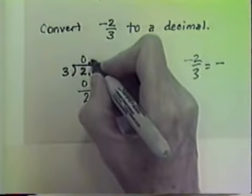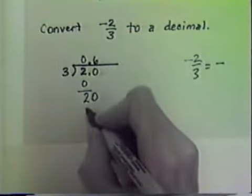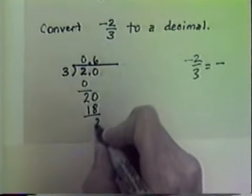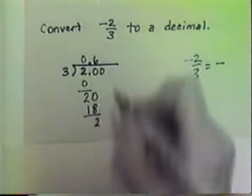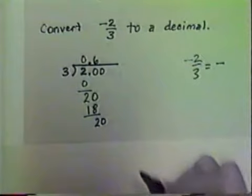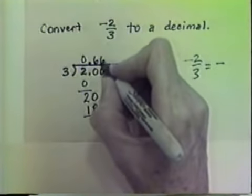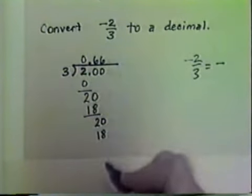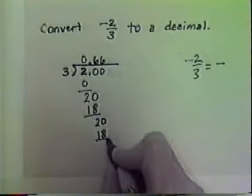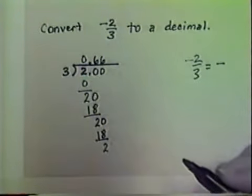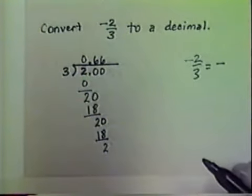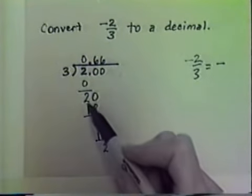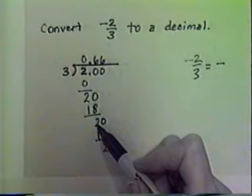Three divides twenty, six times. Six times three is eighteen. Subtract, we get two. Affix another zero and bring it down. Three divides twenty again, giving us six. Six times three is eighteen — you see what's happening. Subtract, we get two. This is going to continue in the same fashion over and over again. You'll notice we keep getting two for the remainder.